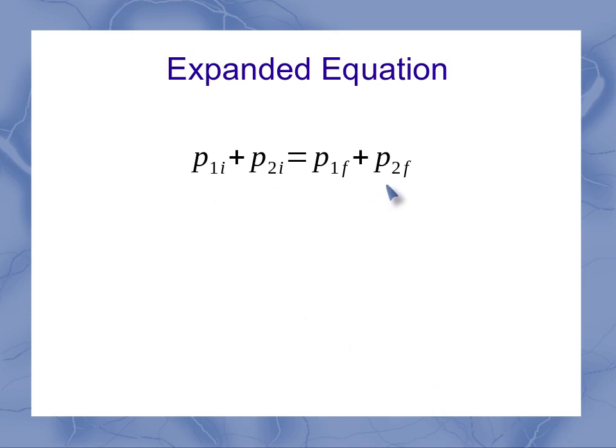Now if I take this equation and expand it out, I realize that each one of these momentums includes a mass and a velocity. Since I've got two bodies, I have two different masses, m1 and m2. And each object has an initial velocity and a final velocity. But this whole equation, everything on the left-hand side, has to balance with everything on the right-hand side.